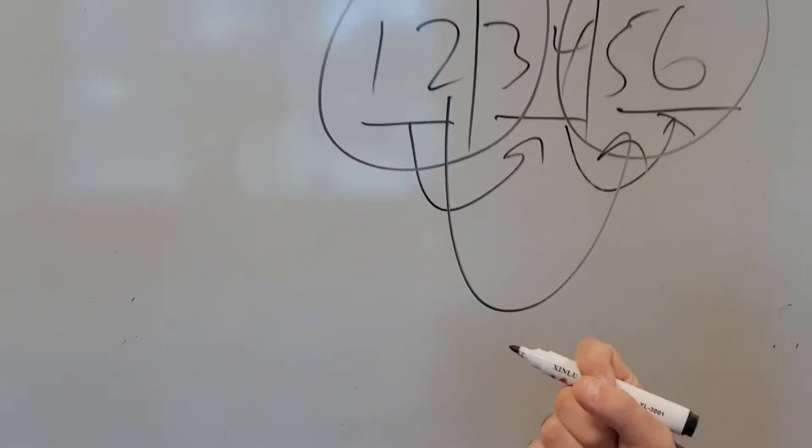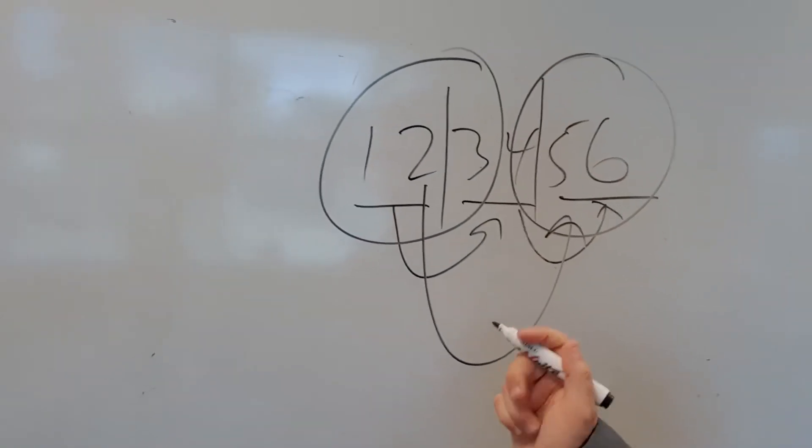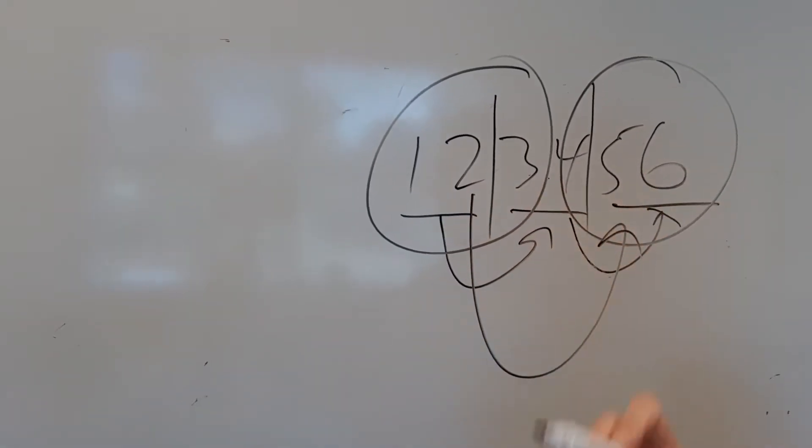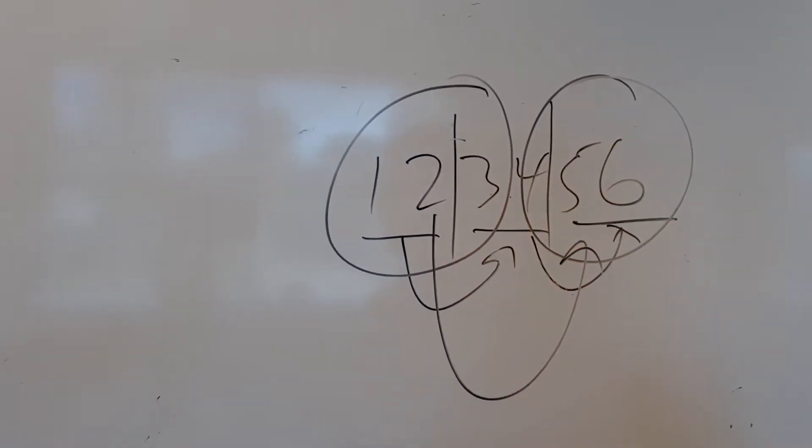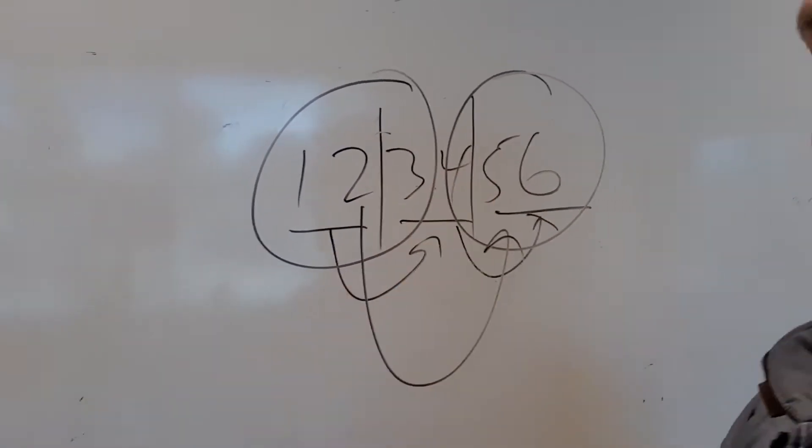That's the beauty of the thousand digit system — you can remember a lot better because you're using fewer items, but you can make them more memorable. You're saving yourself effort while still remembering more. Instead of connecting three things together, you're now connecting two, but you're still remembering six digits.